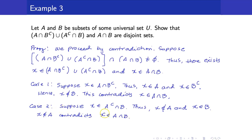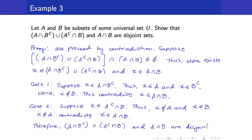Therefore, in both cases we have found a contradiction. So our original assumption is false, and therefore the two sets must be disjoint. Remember, when you are proving by cases and you want to show a contradiction, you have to make sure that both of your cases will yield a contradiction. Because if one of the cases does not yield a contradiction, that is not valid.